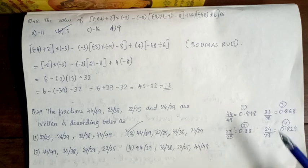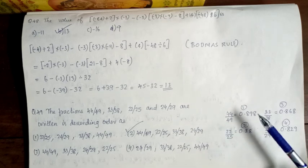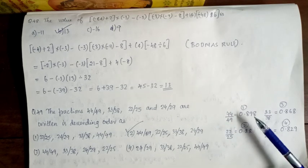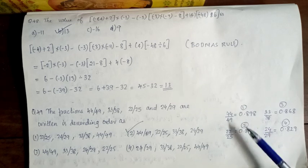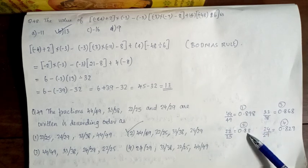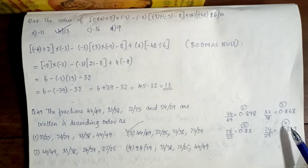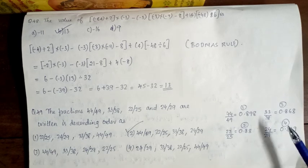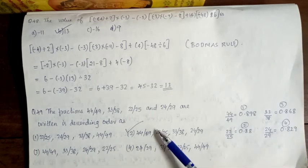So we have the decimals and we write them in descending order from highest to lowest. So our option 2 is correct.